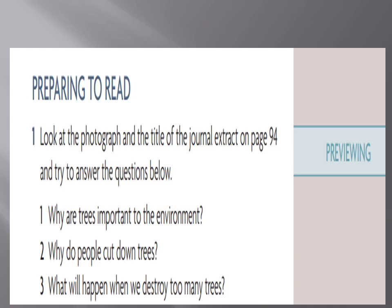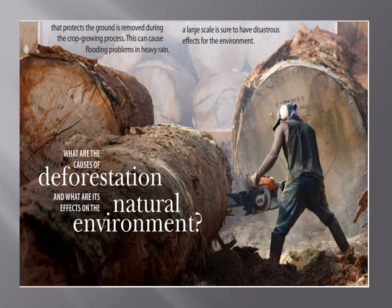Now preparing to read — look at the photograph and the title of the journal extract on page 94 and try to answer: Why are trees important to the environment? Why do people cut down trees? What will happen when we destroy too many trees? The article is about deforestation and cutting down trees. The protective cover of the ground is removed during crop growing, which can cause flooding problems in heavy rain, and large-scale deforestation is sure to have disastrous effects on the environment.